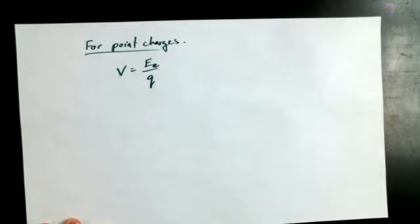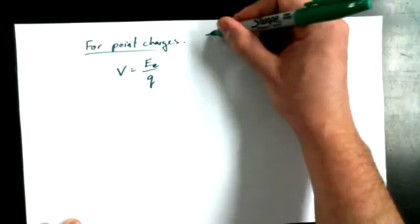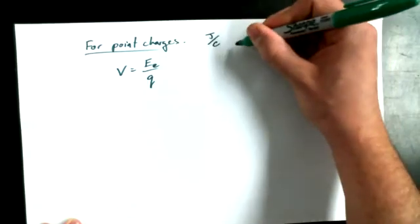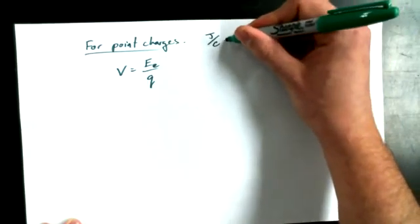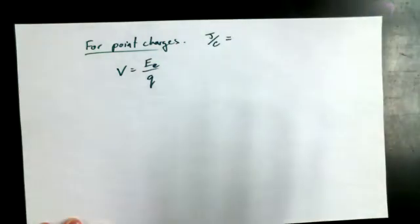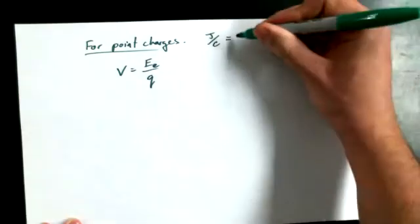Joules per coulomb — that's the entire point. Joules per coulomb is the same as voltage. And so voltage — V.